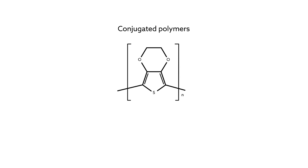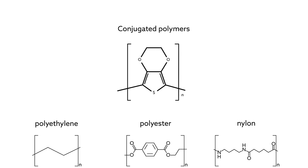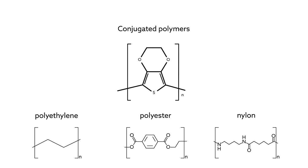Conjugated polymers can effectively bridge this gap because they speak both languages. They conduct both electrons and ions. That's because, unlike more familiar polymers such as polyethylene, polyester, or nylon...